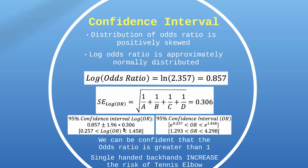We now have a sample estimate, and we have the standard error. So we can go the estimate plus or minus effectively two lots of this standard error, or 1.96 lots, because when you deal with a normal distribution, 1.96 standard deviations either side gives you a 95% confidence interval. So we can find that 95% confidence interval for the log odds ratio. And then all we need to do is just exponentiate that, or essentially unlog it to get our confidence interval for the odds ratio. Here we can say that we have a 95% confidence that the odds ratio is between 1.293 and 4.298. You'll notice that the odds ratio is greater than 1. The value of 1 does not exist in that interval. So we can say with confidence that single-handed backhands increase the risk of tennis elbow.